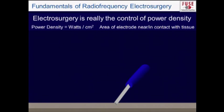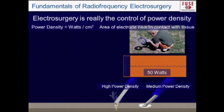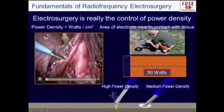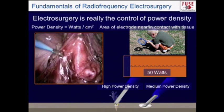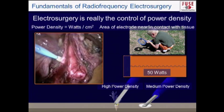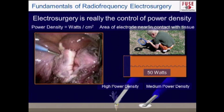Taking a blade electrode in two different orientations demonstrates this clearly. Edge-on to the tissue creates high current density; flat against the tissue creates medium current density. Using the same so-called cut, low-voltage output: the edge-on orientation produces vaporization — cells explode — while the flat orientation produces desiccation. This is demonstrated at 50 watts with cutting output — rotating the electrode from edge to flat instantly changes the tissue effect from vaporization to desiccation and back.